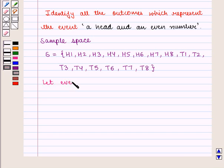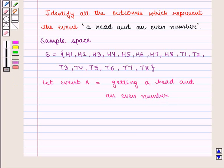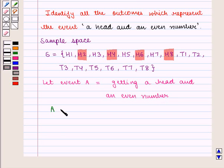Let event A be equal to getting a head and an even number. Here we see that we have four combinations of head and even number. So event A is equal to the set containing elements H2, H4, H6, H8.